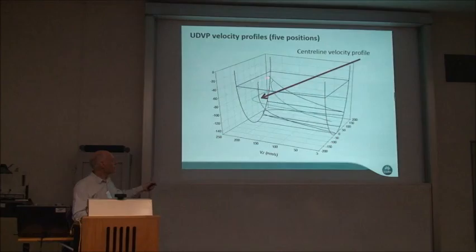We have two separate secondary flow cells bringing slow-moving fluid from the bottom and mixing it with fast-moving fluid at the top. Normally the maximum velocity would be at the surface, but we have the maximum slightly below the surface. This is an important phenomenon — small channels behave differently than big channels. It becomes less important as we go to more dilute materials and higher flow rates where turbulence mixes everything in together.